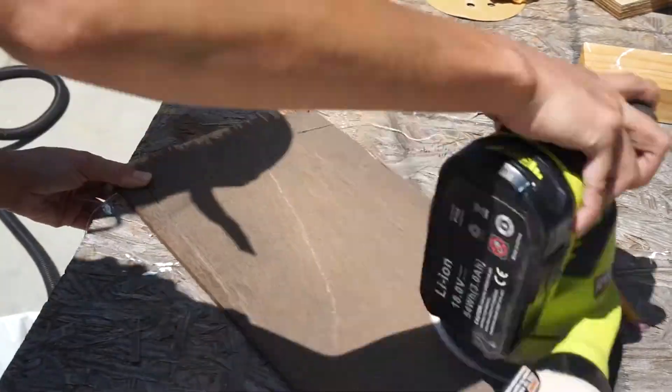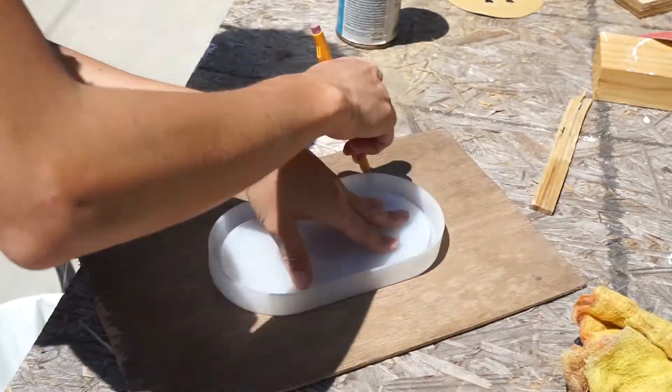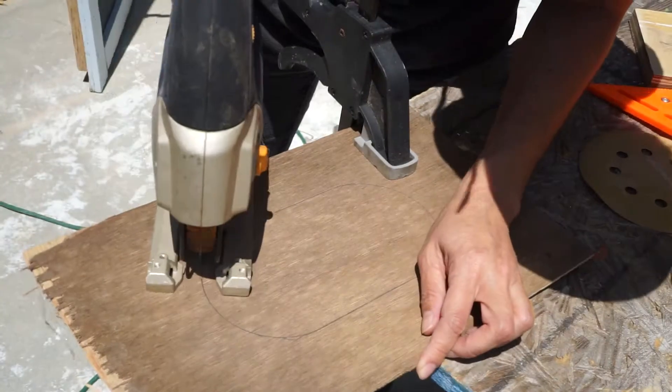Quick little outlet cover. I took some quarter-inch ply, sanded it down, cut out the template, and then used my jigsaw to cut it out.